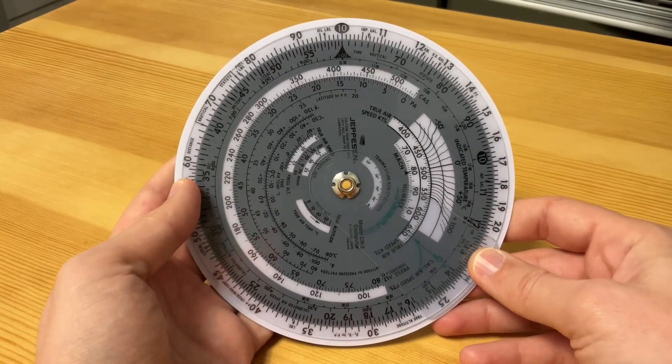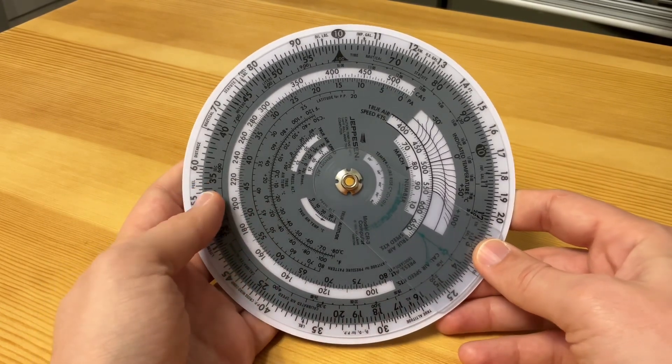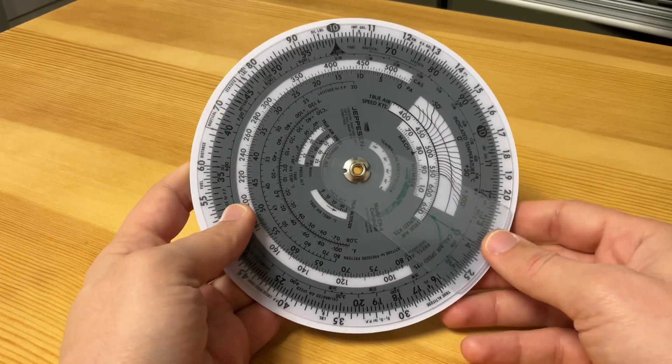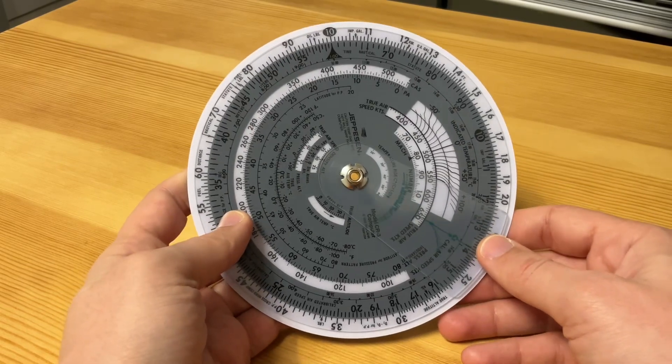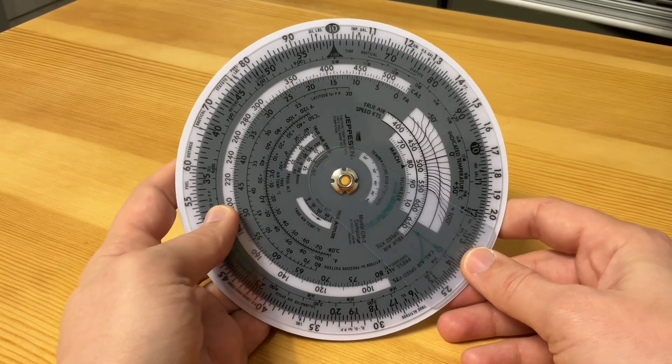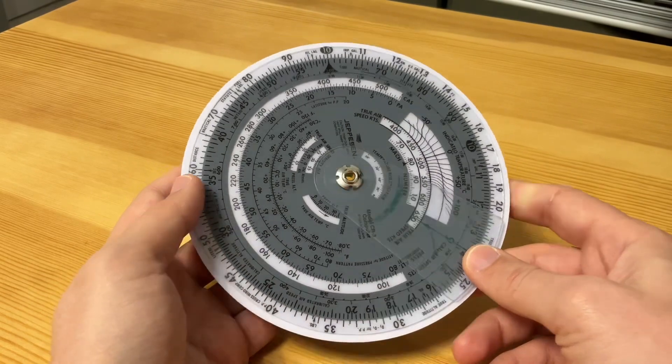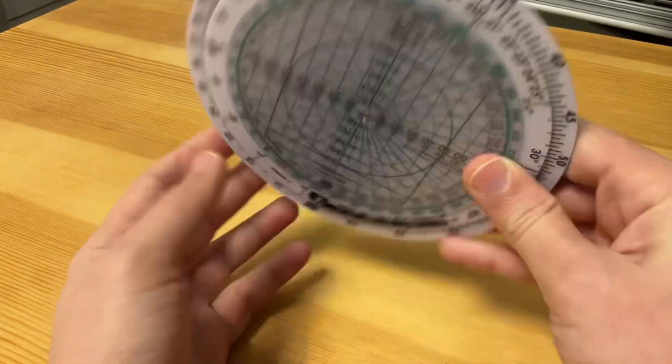This is a Japson CR3 flight computer, one of the coolest flight computers out there. This is the same thing as your E6B; they call it a circular E6B. This is basically a slide rule and there are two sides: this is the computer side and this is the wind side.